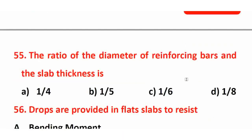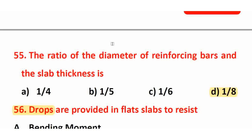Next question: The ratio of the diameter of a reinforcing bar to slab thickness. The right answer is 1/8. So the diameter of the reinforcing bar should not exceed 1/8 of the slab thickness.